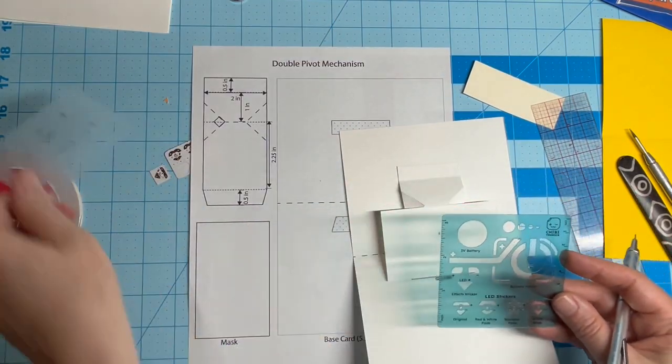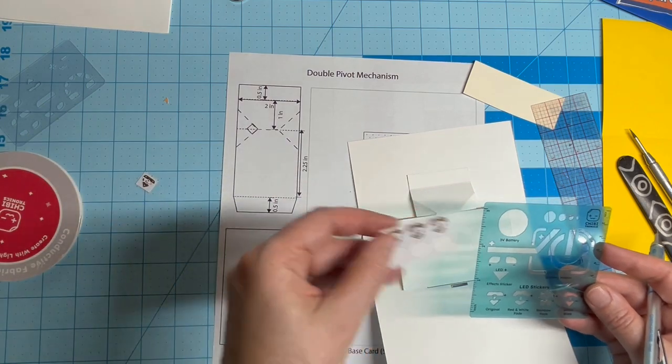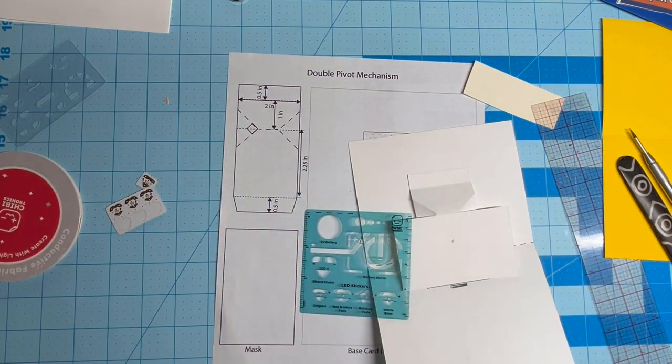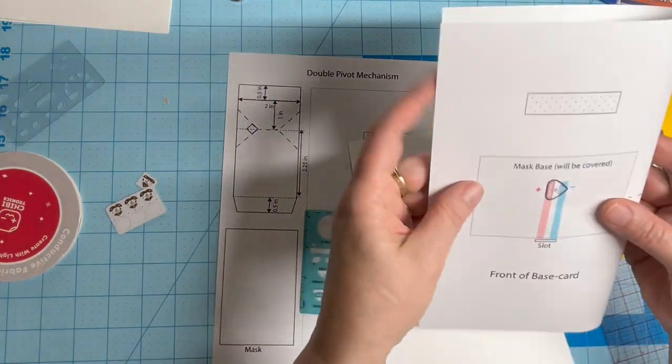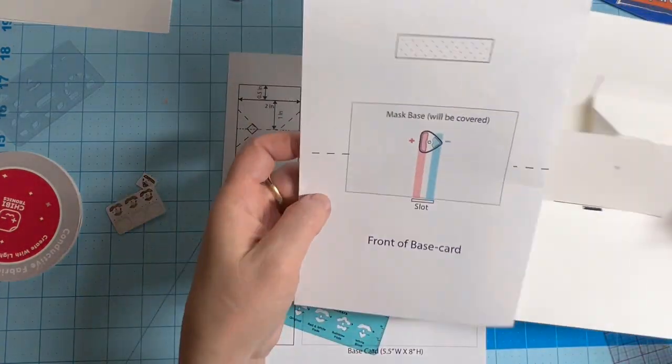I'm using a chibitronic stencil to mark the location for my LED, and I'm using a red fade animating LED. But if you don't have a stencil, you can use a circuit diagram as a guide.